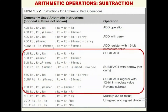For subtraction: SUB subtracts the content of RM from RN and stores the difference in RD. SUB RD, RN, RM performs RD = RN - RM. SUB RD, #immediate means RD = RD - immediate value, and SUB RD, RN, #immediate means RD = RN - immediate value.